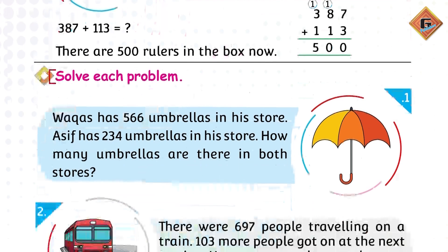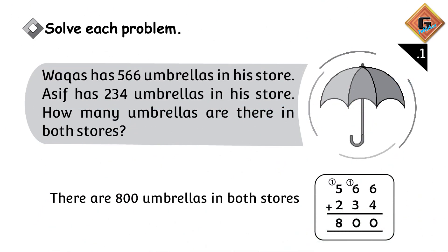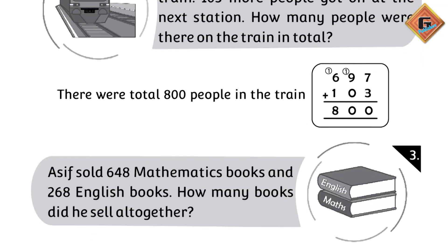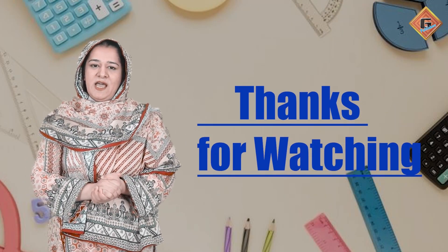So we have our answer. There are 500 rulers in the box now. Now solve each problem. Abhi problems word problems kuch solve kare and after that check your answers from the screen. I hope you have understood the concept. Allah Hafiz.